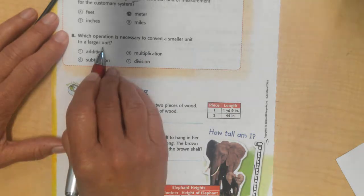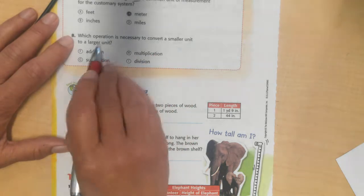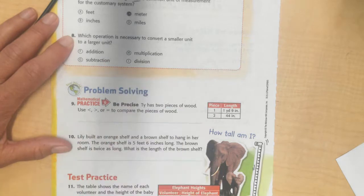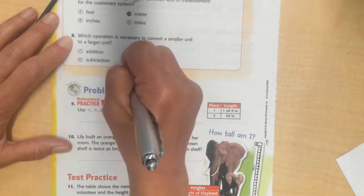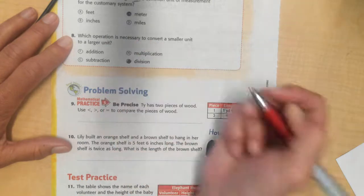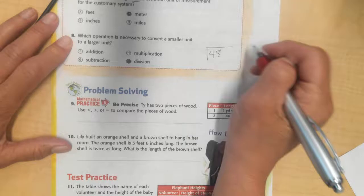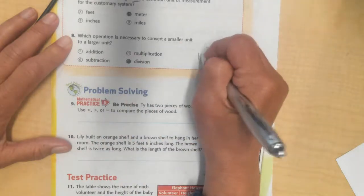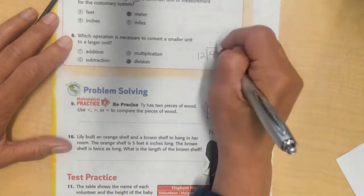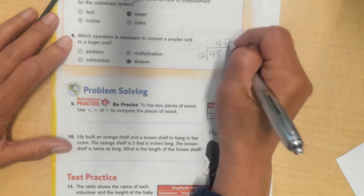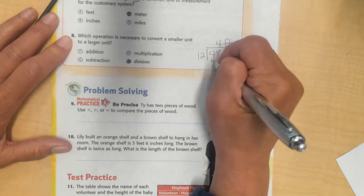Which operation is necessary to convert a smaller unit to a larger unit? If I have smaller, and I want to turn it into a larger one, I'm going to take the smaller ones and divide them up by my larger number. If I have 48 inches, and I want to know how many feet that is, I'm going from smaller to larger feet or bigger, I'll divide it by 12. And I'll say there are 4 feet. Because 4 times 12 is 48.